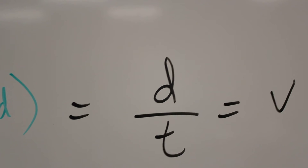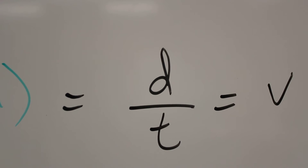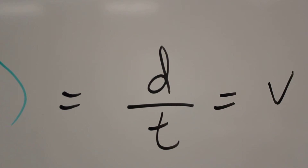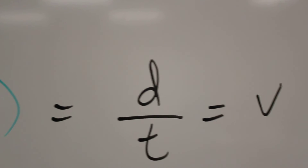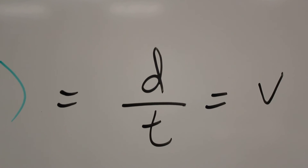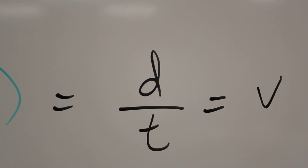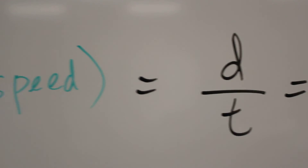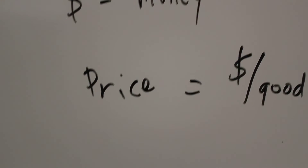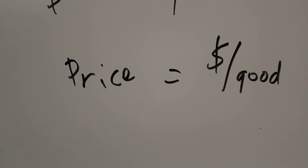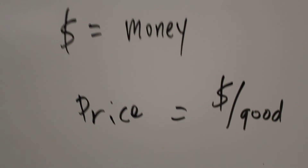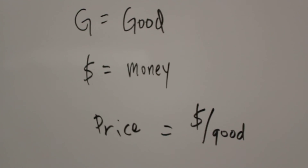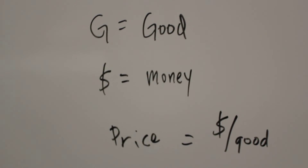50 miles per hour, 20 miles per hour, 1 mile per hour, 2 miles per hour, 22 miles per hour, 1,700 miles per hour. Another thing you look at is prices. Prices is a good measure to go against money.